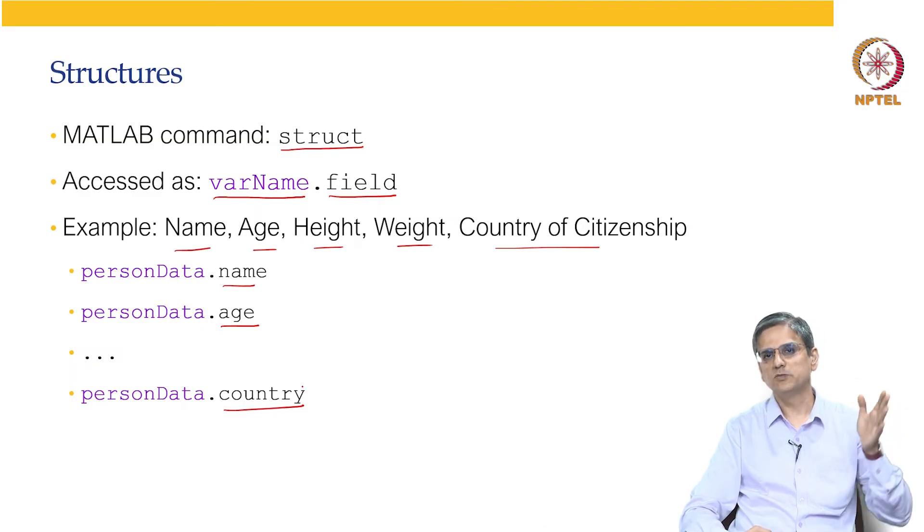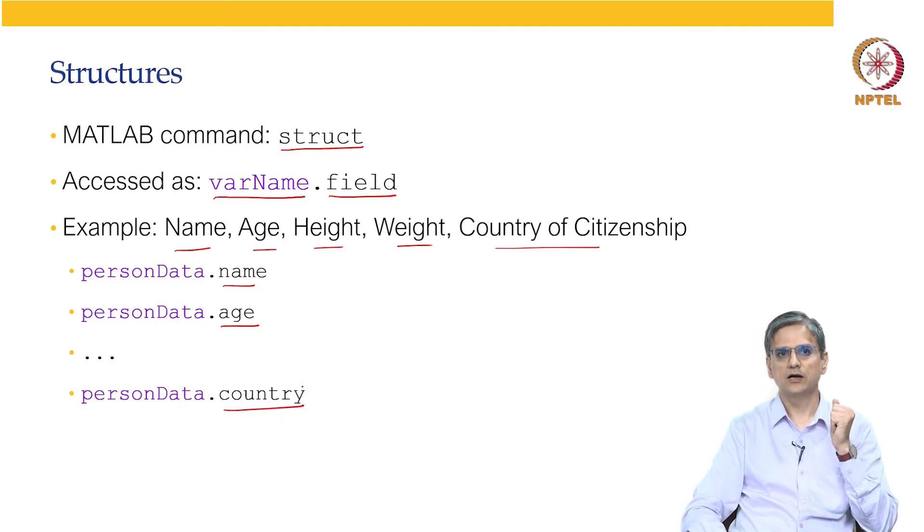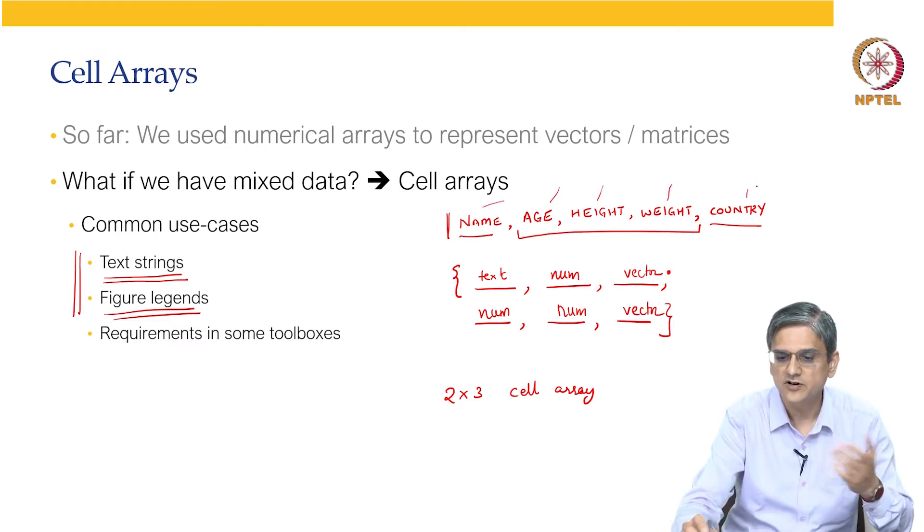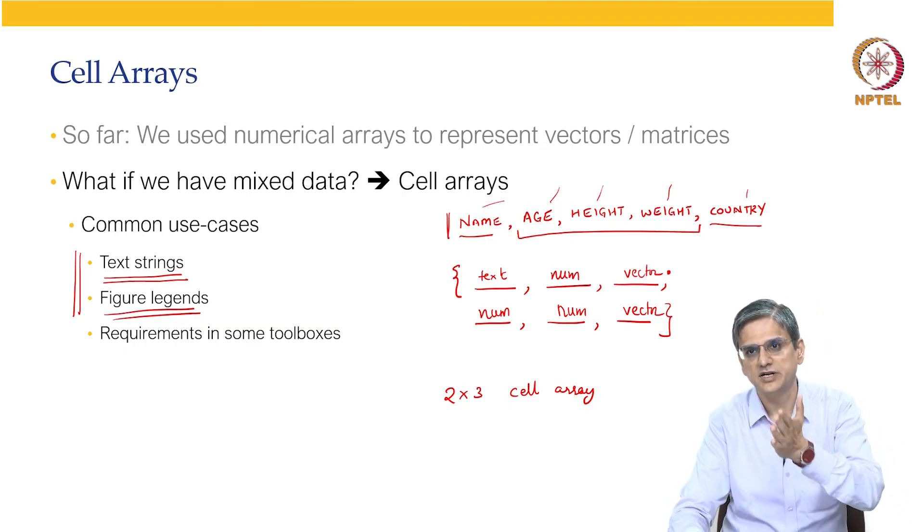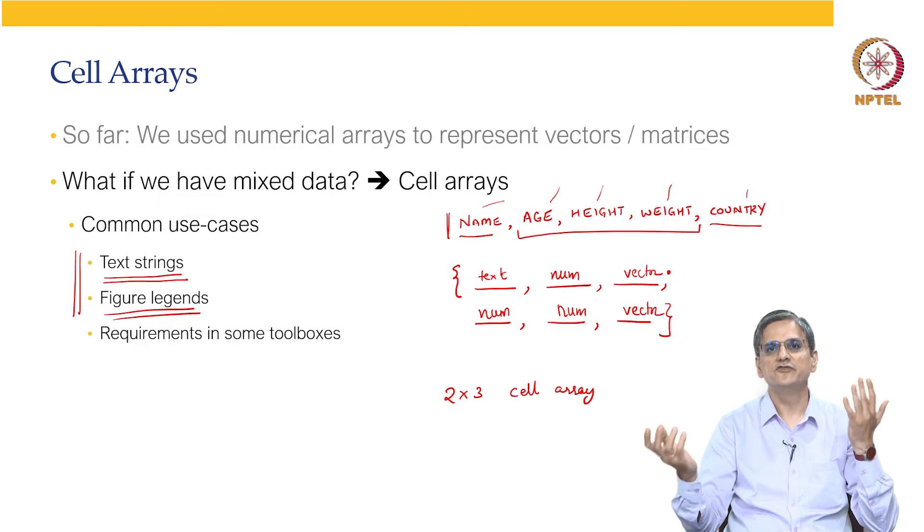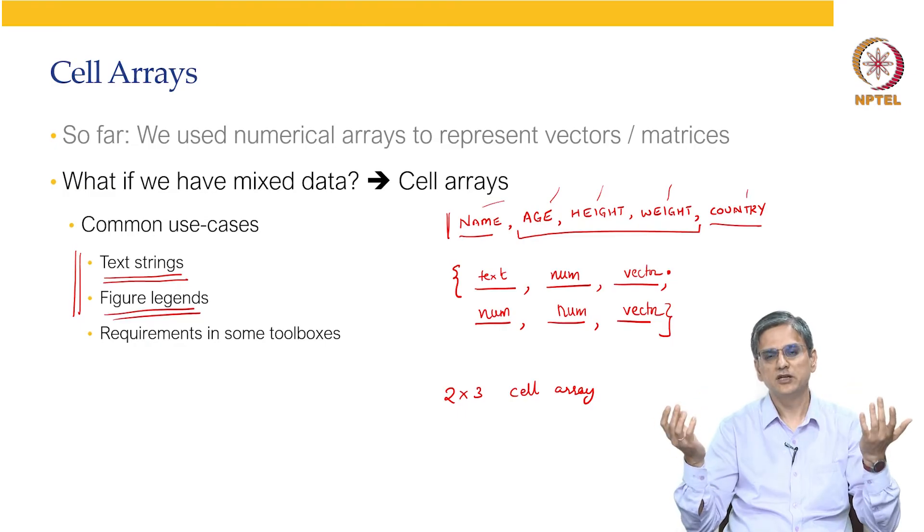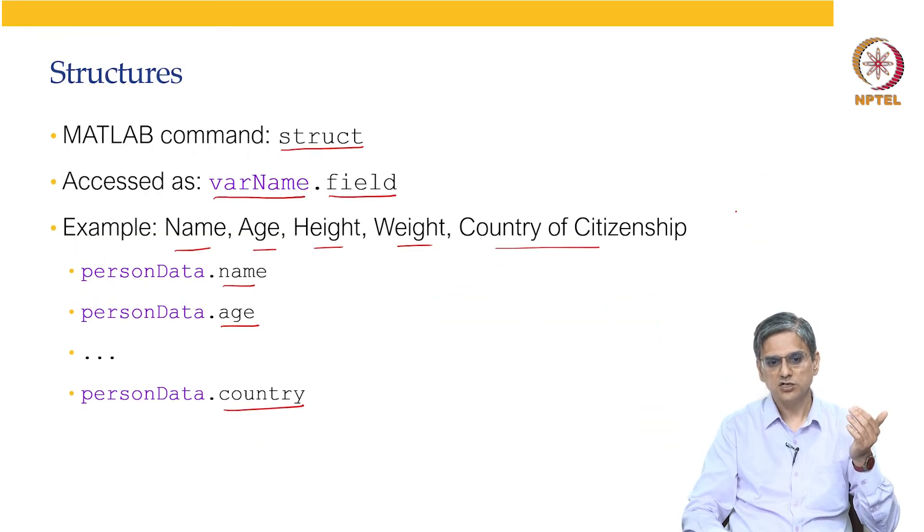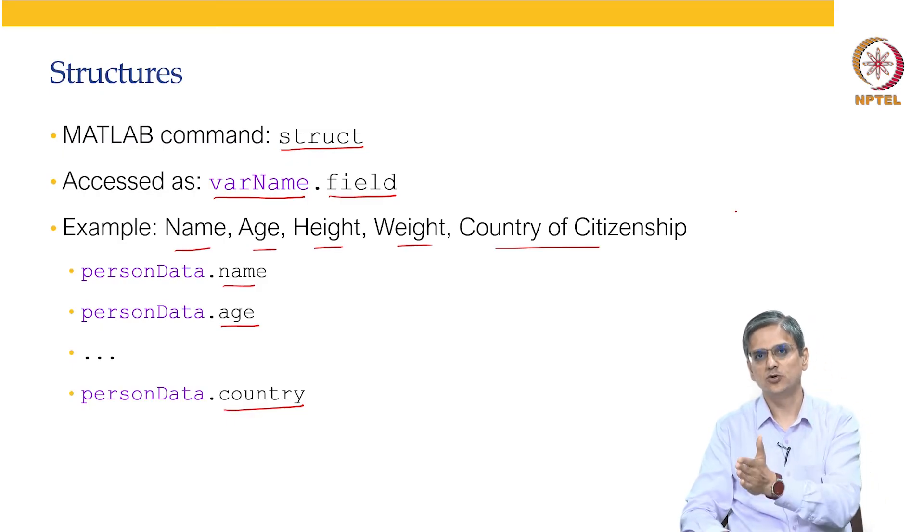What is the distinction between cell arrays and structures? In cell arrays, let us say you had a cell array of name, age, height, weight, and country. The first element is name, second element is age, third element is height, fourth element is weight. Let us say you get confused whether second element is age or second element is height, then you are going to be in a little bit of a trouble because you do not know what to do next. As against that, if you have a structure, it will be called person data dot name, you know it is name, person data dot age, you know it is age, person data dot height, you know it is height and so on.